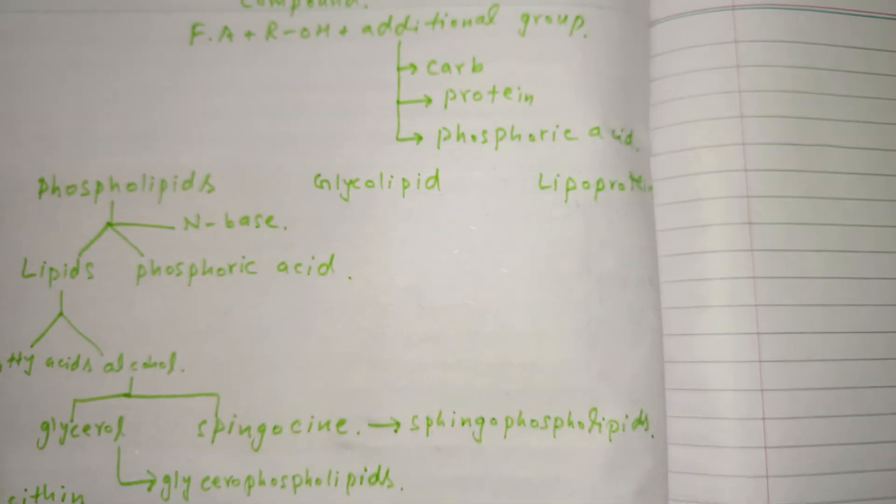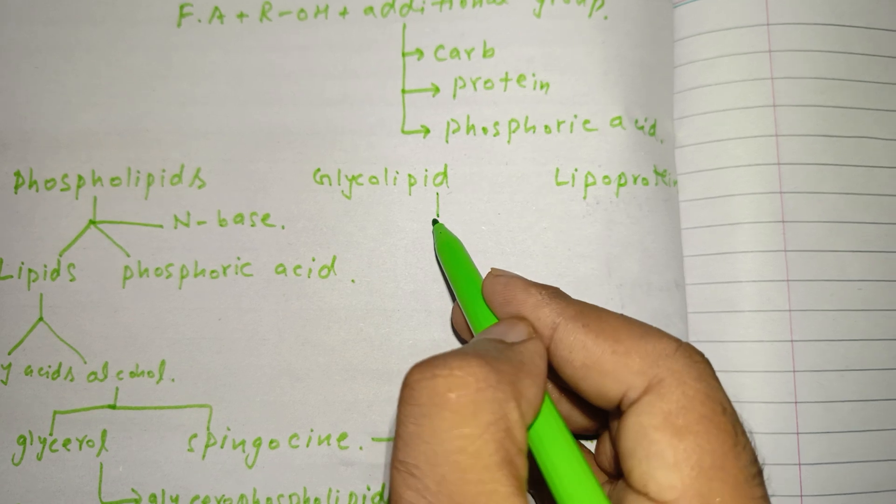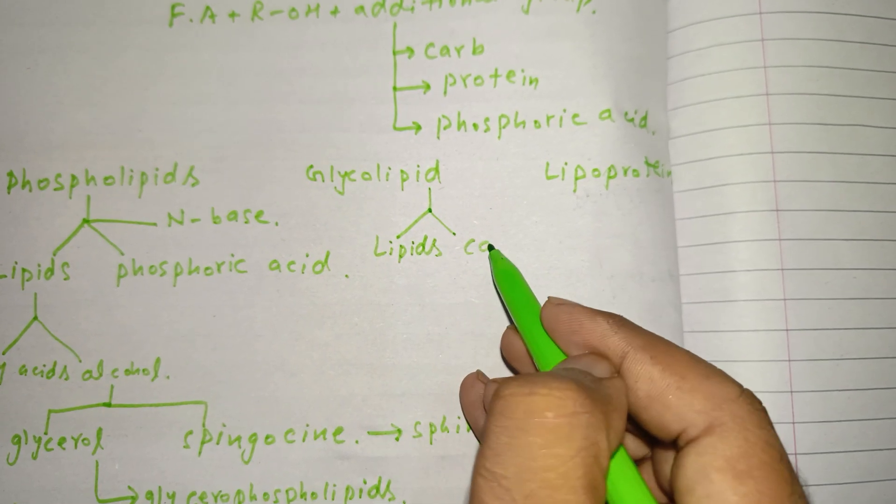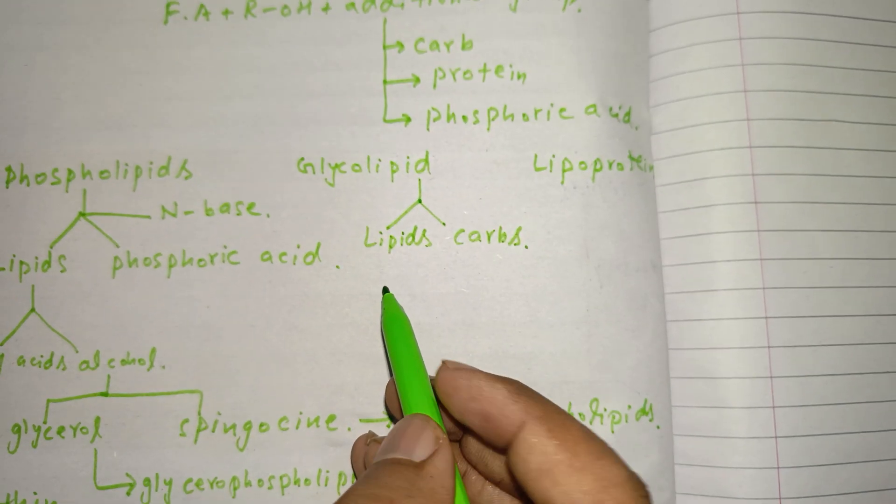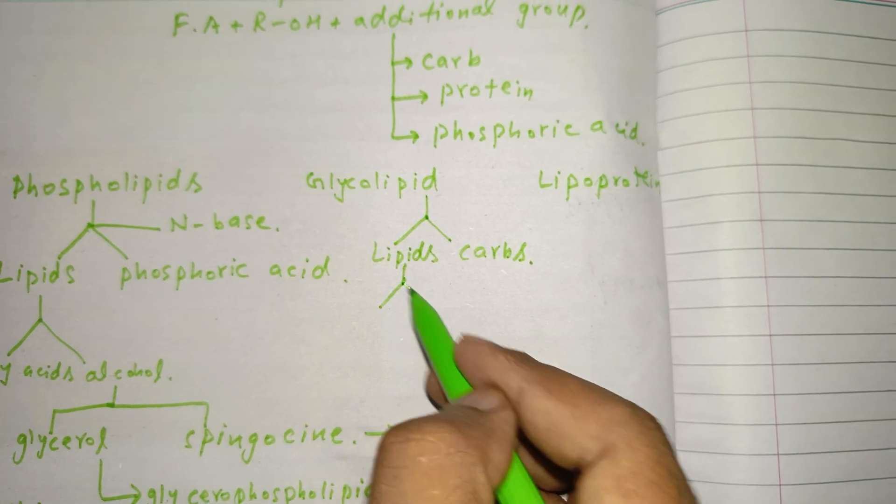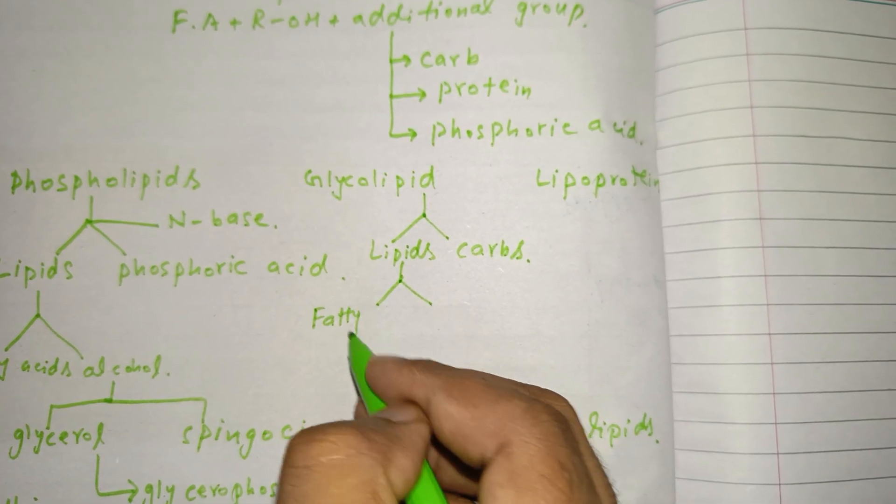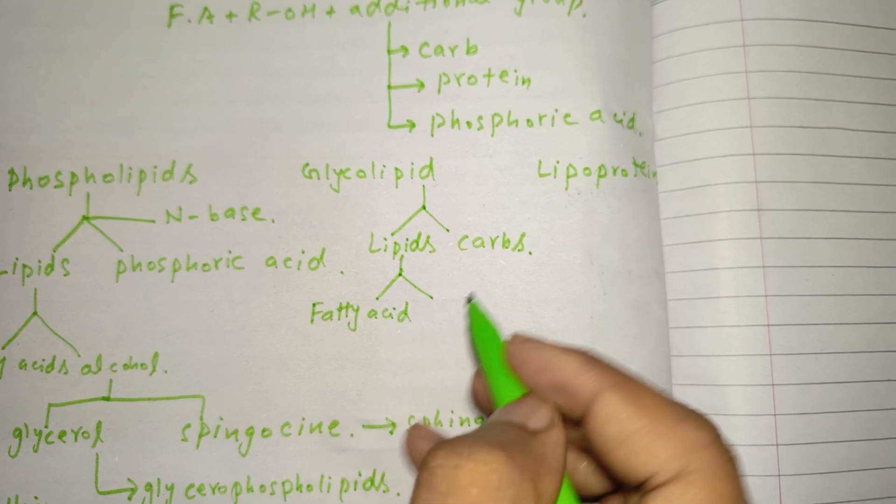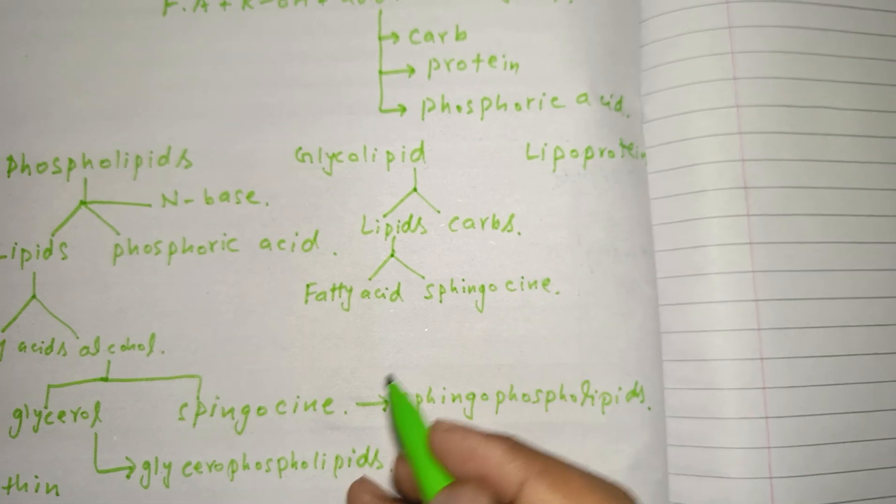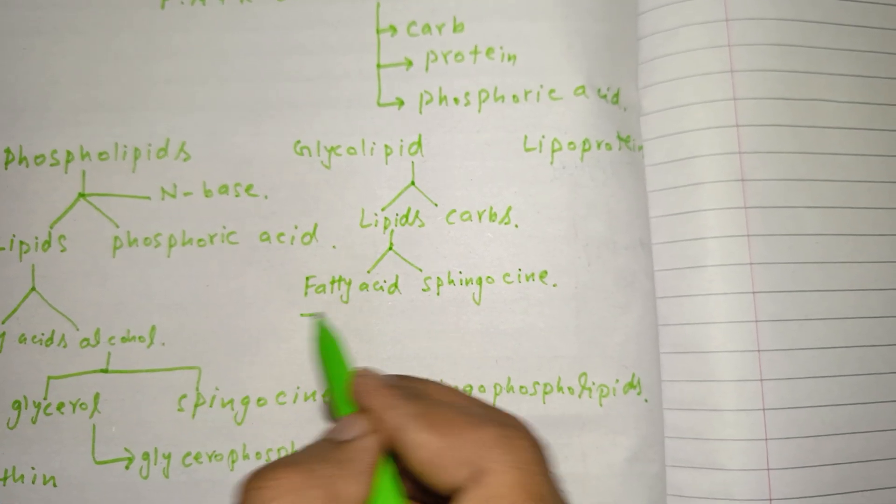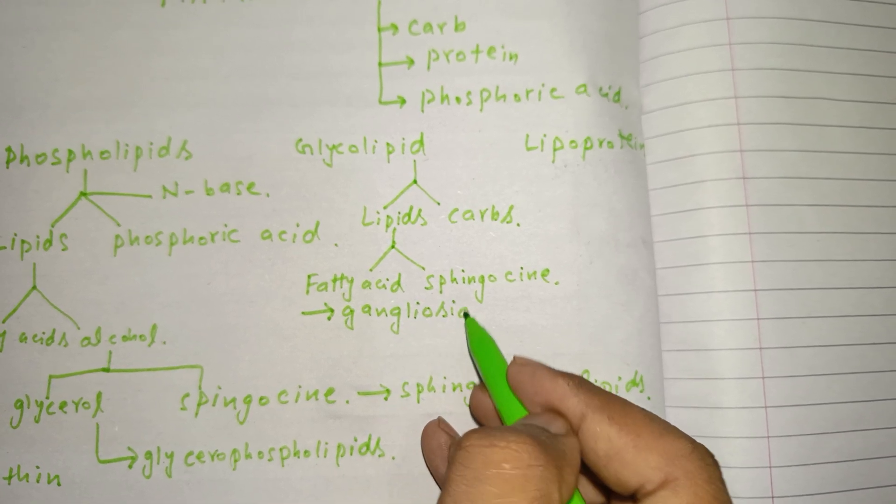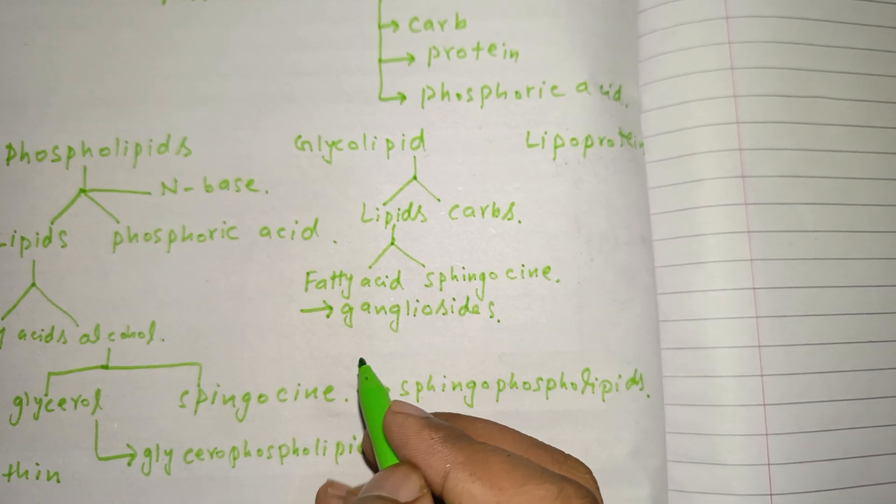Now, come to the next, that is glycolipids. As the name indicates, glycolipids consist of lipids plus carbohydrates. The components of glycolipids are fatty acid and the alcohol is sphingosine. There are two examples of glycolipids: gangliosides and cerebrosides.